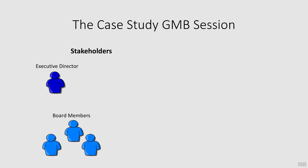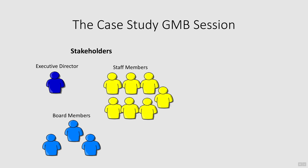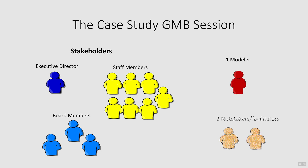The modeling session for the case study included 11 stakeholder participants. Ideally, you should have about 5 to 12 stakeholders in the modeling session. The participants included the executive director, a few board members, and staff from different areas of the organization. We also had a modeler and two individuals that took notes and facilitated the session. Our modeling session was a 4-hour period in one day, which is far shorter than usual, but it was all the time we were able to get with the stakeholder group.